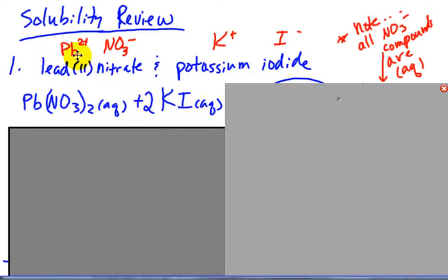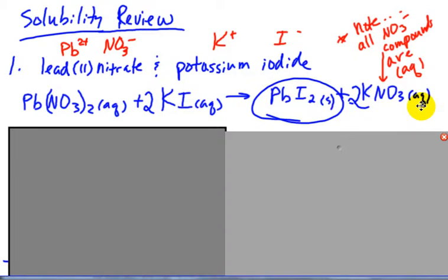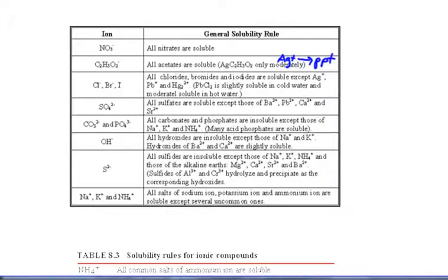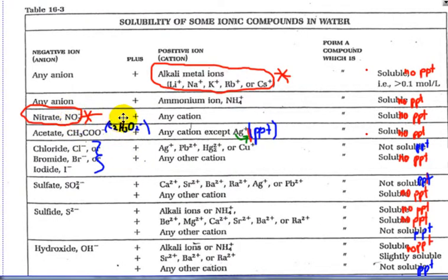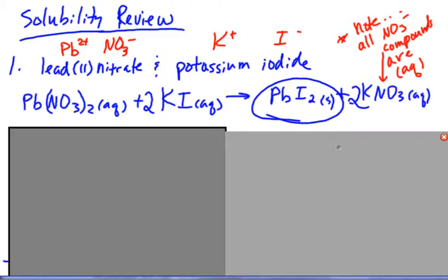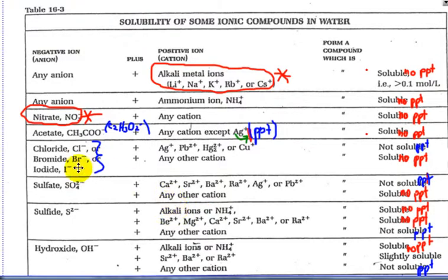They're going to switch ions. Lead will form with iodide and potassium will form with nitrate. One key thing: all nitrate compounds are soluble. So when potassium combines with nitrate, it is going to be aqueous. If we go back to your chart, nitrates with anything, including potassium, are soluble. Since there is a precipitate formed in this reaction, it has to be lead iodide. If we go back, iodide combined with lead 2 - PPT. That is the precipitate.